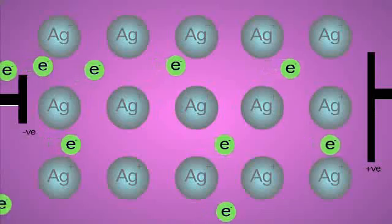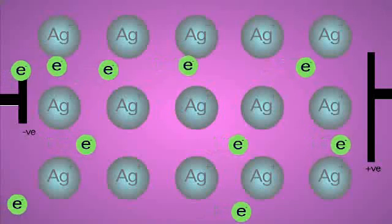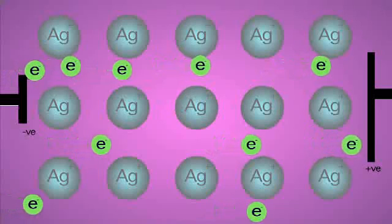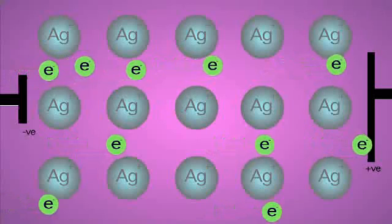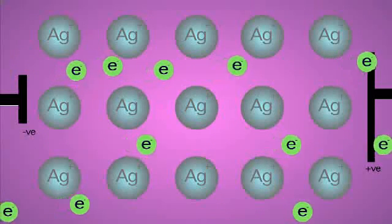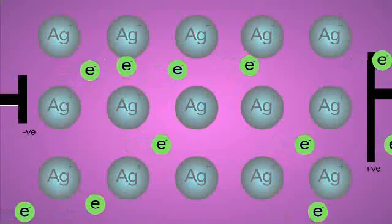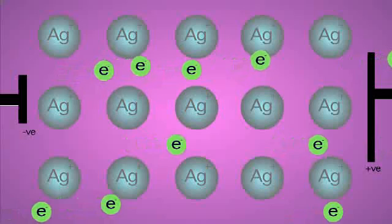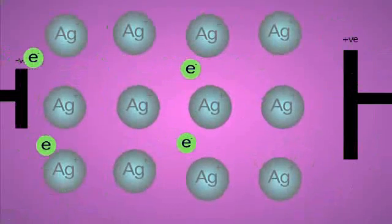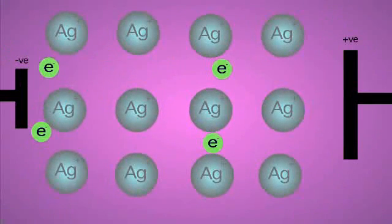Whenever you apply a voltage across a metal, there is an electric field so the electrons feel a force. They therefore drift from one end to the other, creating a current. Metals are not perfect conductors, however, as some of the electrical energy is lost to resistance.